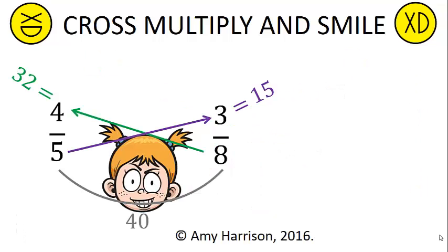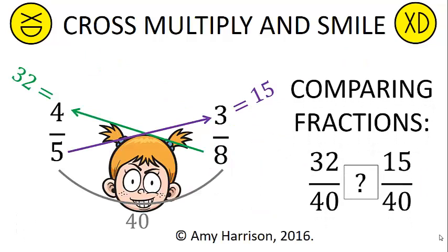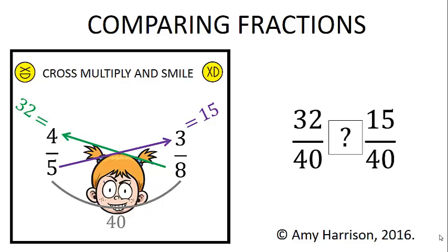You can use the cross multiply and smile for comparing fractions. In this example, we can see that 32 is greater than 15, and since we have a common denominator, that means that 32 fortieths is greater than 15 fortieths.